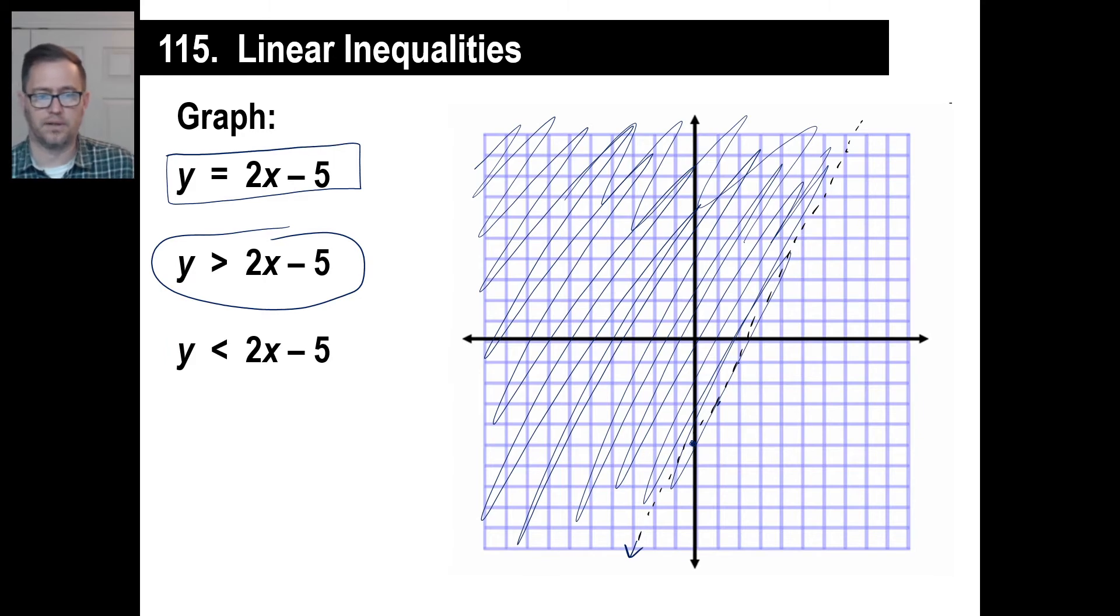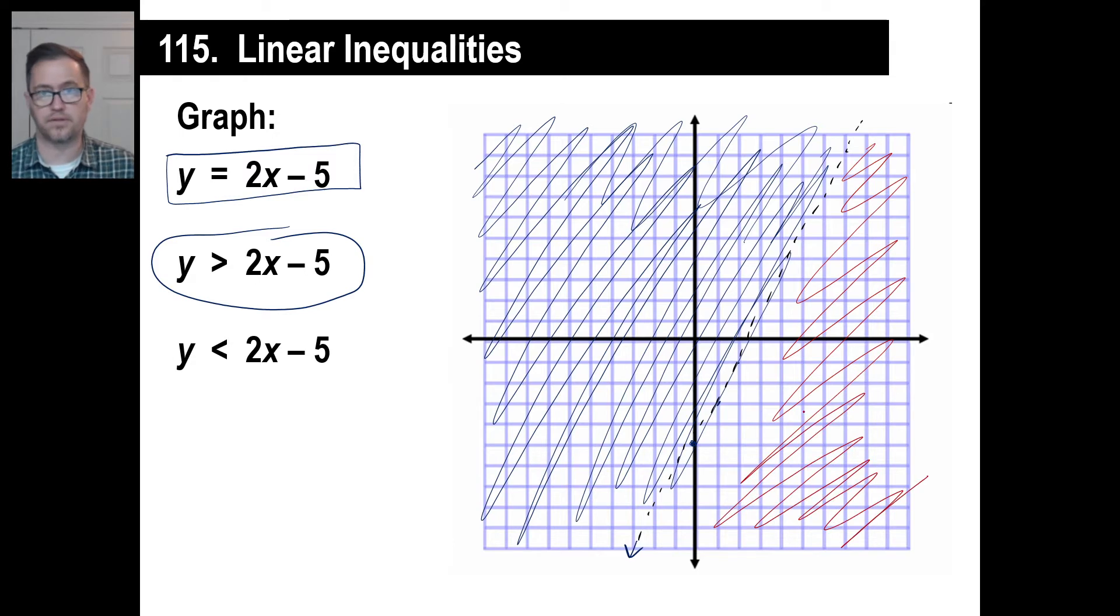Here's another one. Y is less than 2x minus 5. Well, what do you suppose that's going to look like? It'll be down here, right? It's going to be on the bottom. So if you were to shade that, you would just shade this part down here. That's y equals less than 2x minus 5.